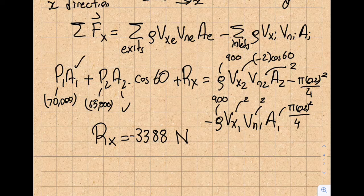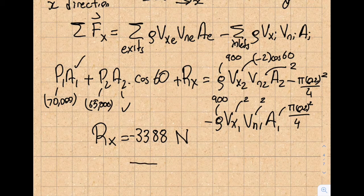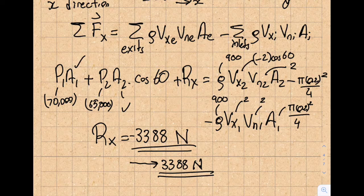The value Rx = −3388 N is the force required to hold the bend in place. The force that the flow exerts on the bend is the negative of that — so the real answer is 3388 N in the opposite direction.